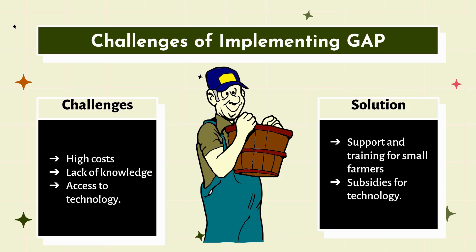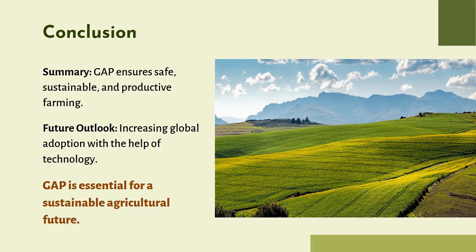In conclusion, adopting Good Agricultural Practices is essential for sustainable agriculture, ensuring that food is safe to eat, the environment is protected, and farm workers are well treated. The future outlook would be to increase global adoption with the help of technology. GAP is really essential for a sustainable agricultural future, and we must all help local, small-scale and large-scale farmers to adhere to these practices in order to implement GAP worldwide.